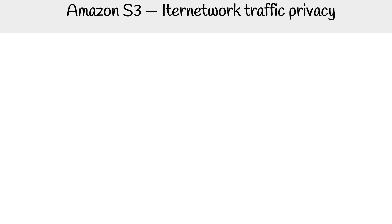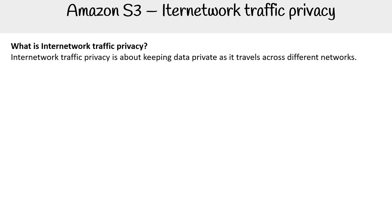Let us talk about internetwork traffic privacy. This is not a specific feature to AWS, but it's just a concept in security. Internetwork traffic privacy is about keeping data private as it travels across different networks. When talking about cloud, it's about keeping the traffic within the AWS network, the Azure network, the GCP network internally, so it never goes out to the internet, benefiting from the cloud service providers' security measures.